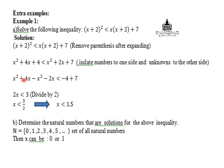x square minus x square cancelled. Plus 4x minus 2x, you will get 2x less than minus 4 plus 7, you will get 3.